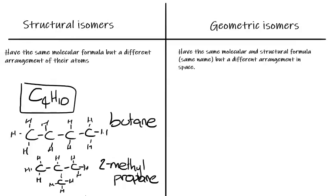So those are structural — or you might hear constitutional — isomers, where we've got the same molecular formula but a different arrangement. Another example could be if we had a functional group; that functional group could come off different carbons and would therefore have a different name and be a different structural isomer. The trick with this is that once you've drawn your structural isomer, make sure you name them — if they end up with the same name, it could be that you've just put something on the opposite end and it still ends up being the same thing. So structural isomers should all end up with different names.